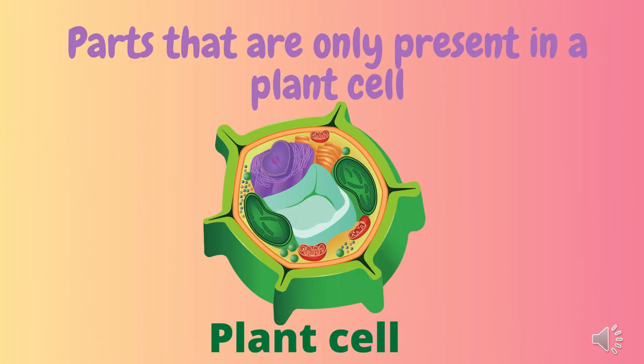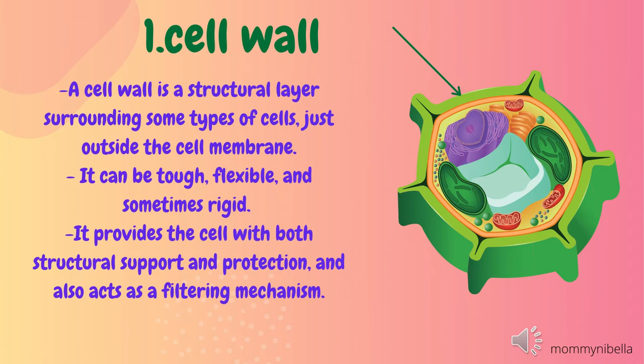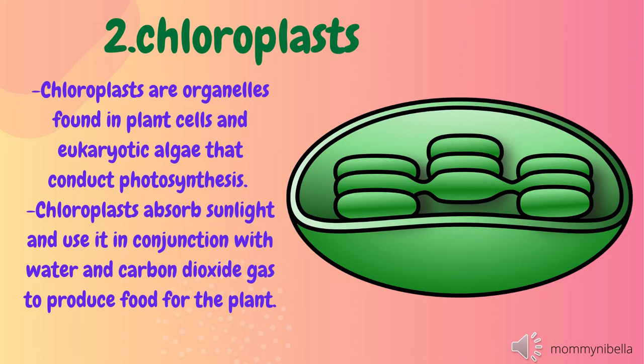Here are the parts that are only present in the plant cell. Number one: cell wall. A cell wall is a structural layer surrounding some types of cells, just outside the cell membrane. It can be tough, flexible, and sometimes rigid. It provides the cell with both structural support and protection, and also acts as a filtering mechanism.